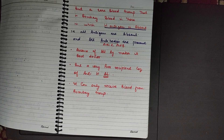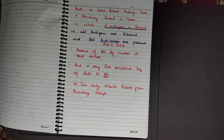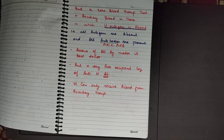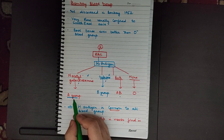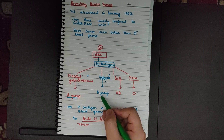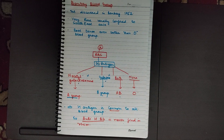The presence of anti-H antibody makes this blood group very, very rare. This blood group cannot receive blood from any other blood group, because if it receives blood from any other group, the anti-H antibodies will destroy those RBCs. Anti-H antibodies will destroy any blood group given to this person. This person can receive blood of only the Bombay blood group.